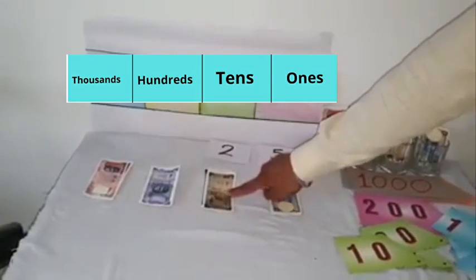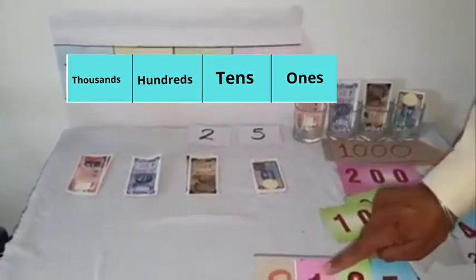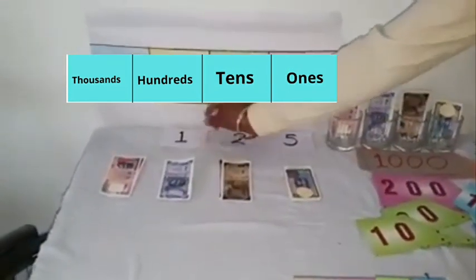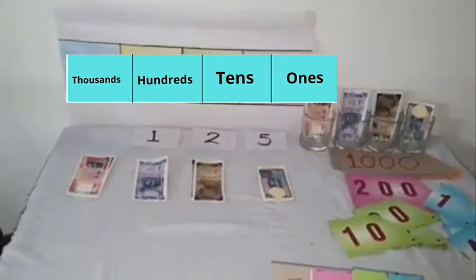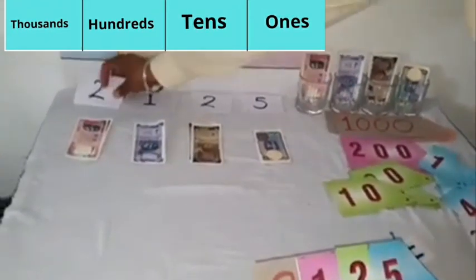There is 1 at hundreds place, so we will put it here and 1 note of 100 is here. The digit at thousands place is 2, so we will place 2 at thousands place and 2 notes of thousands are here.